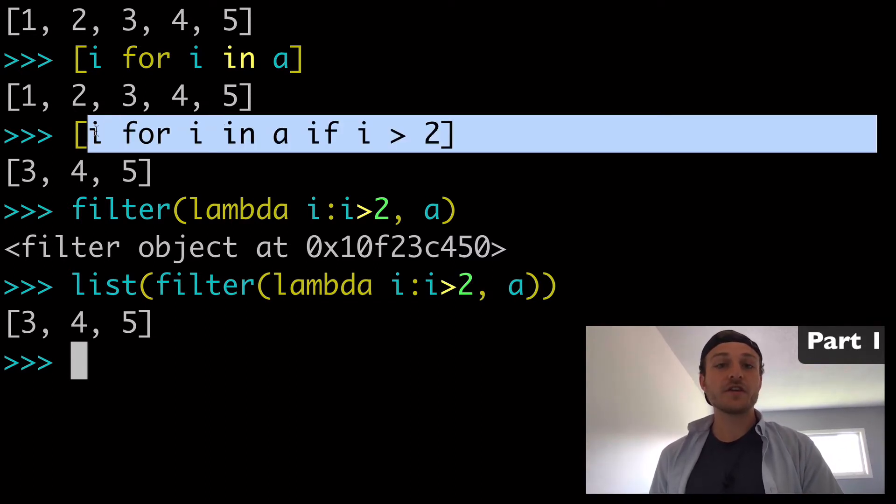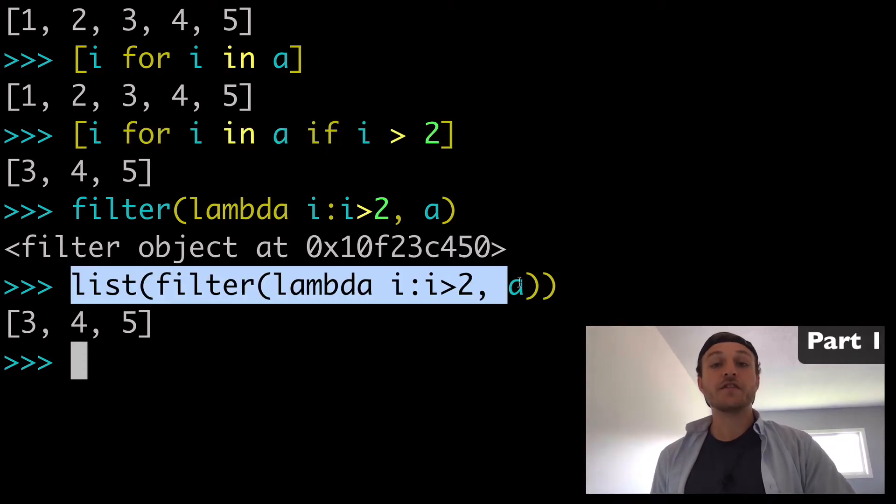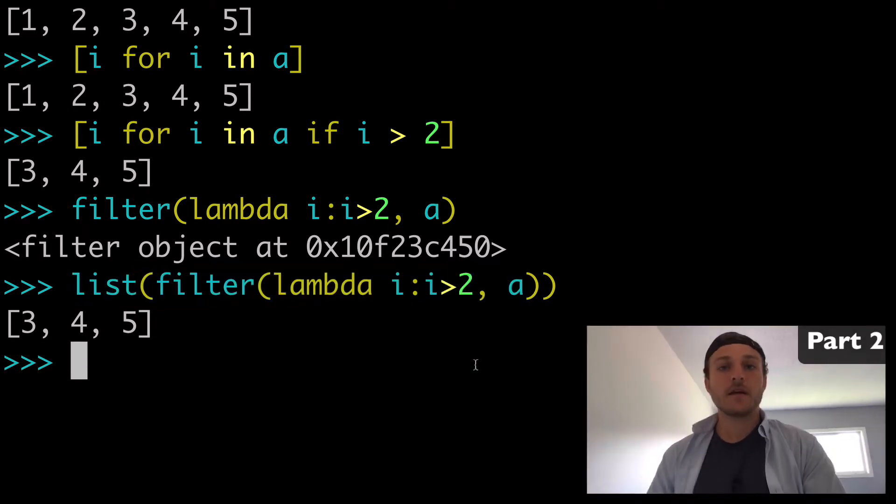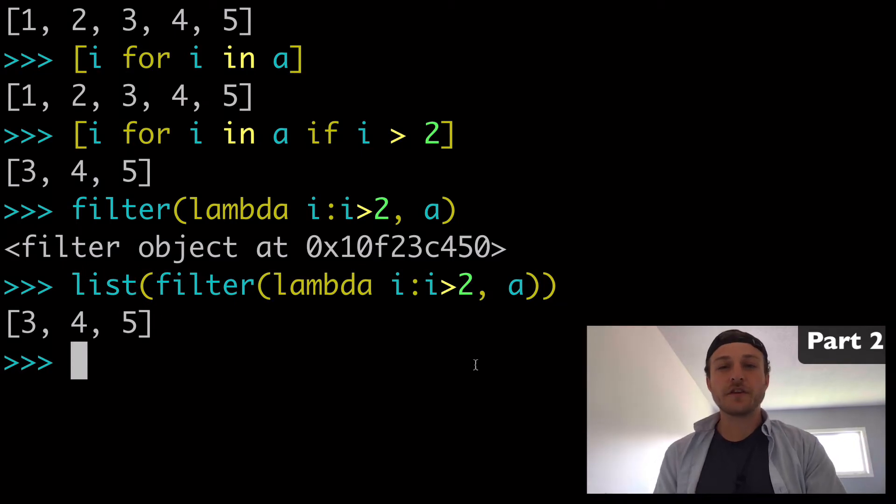Two ways to filter things in Python. The first using a list comprehension with an if statement to the right. And the second is with the filter function, and in this case using a lambda and the list function as well.